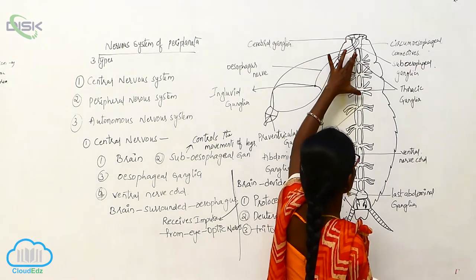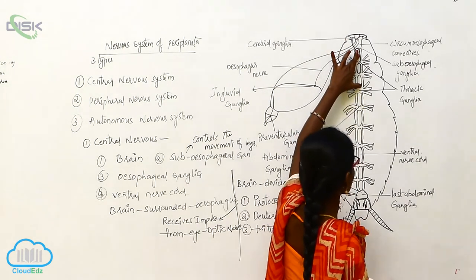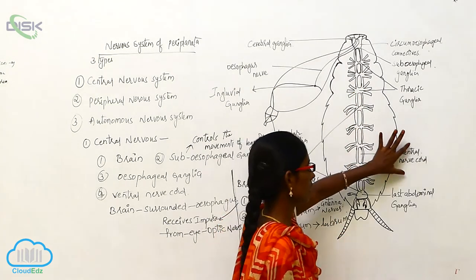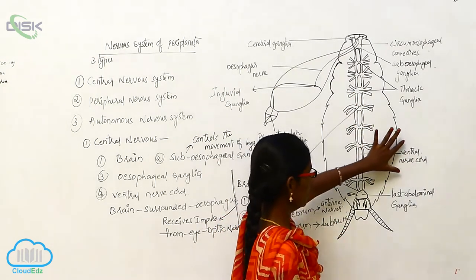Subesophagal connectives, three thoracic ganglia, and remaining six are ventral nerve cord.